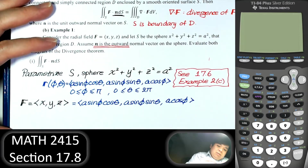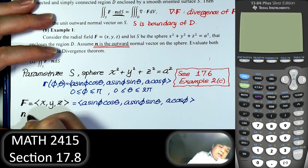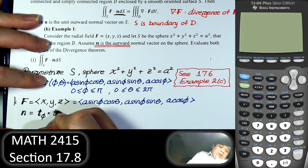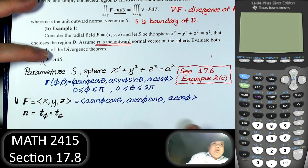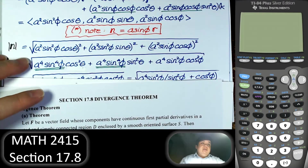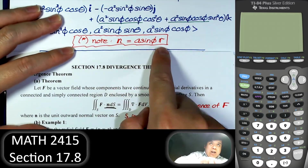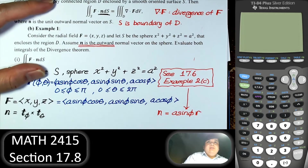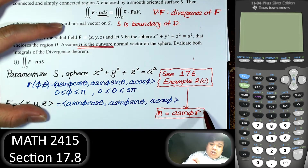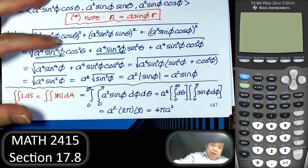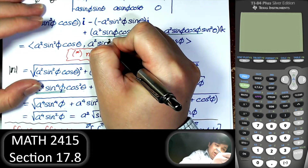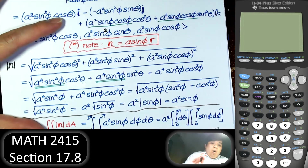Next is the normal vector n dS. We write n as the cross product of the derivative of r with respect to φ, crossed with the derivative with respect to θ. Also from Section 17.6, the normal vector equals A² sin φ times r — make sure there is a square there. Please go back to page 146 or Section 17.6, Example 2C to verify.